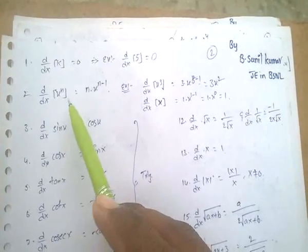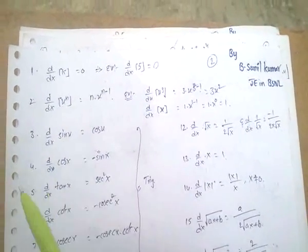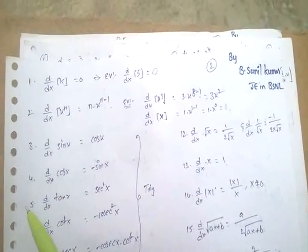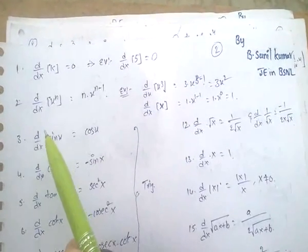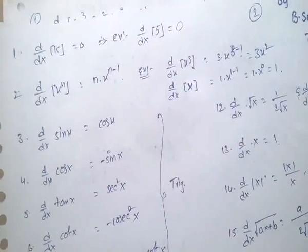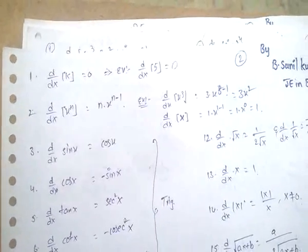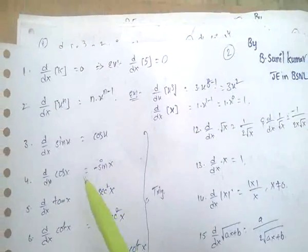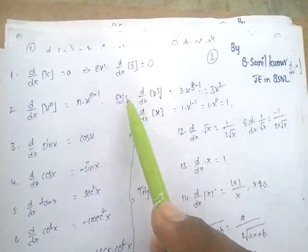The formulas: d/dx of k equals 0. Why is d/dx of a constant equal to 0? Because the constant is fixed — there is no change. So that's why d/dx of a constant is 0. Any constant equals 0.